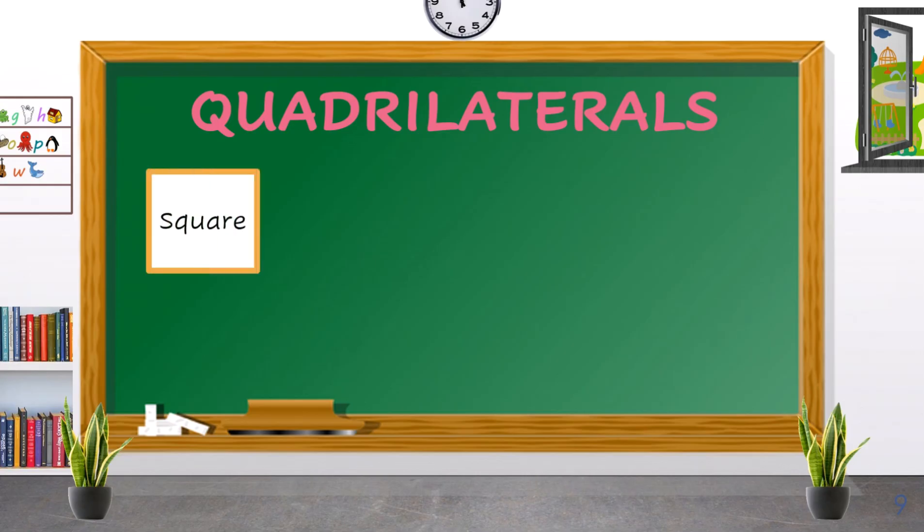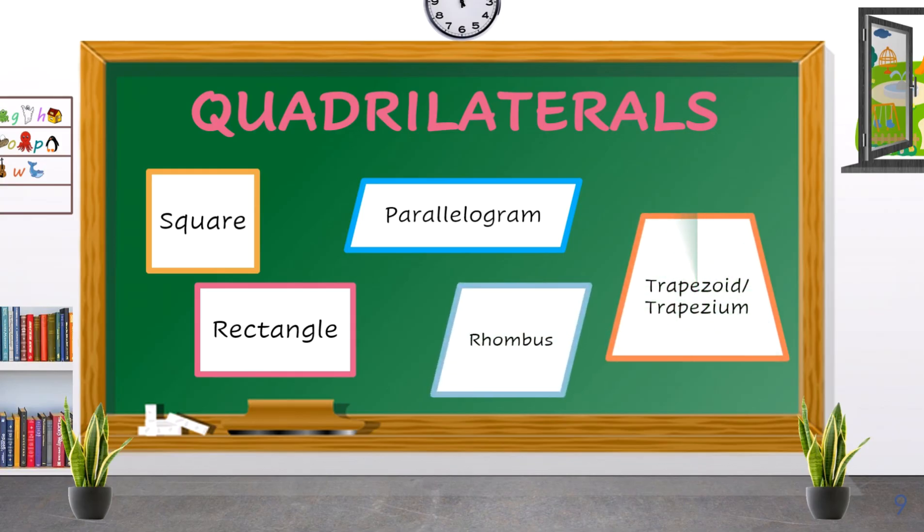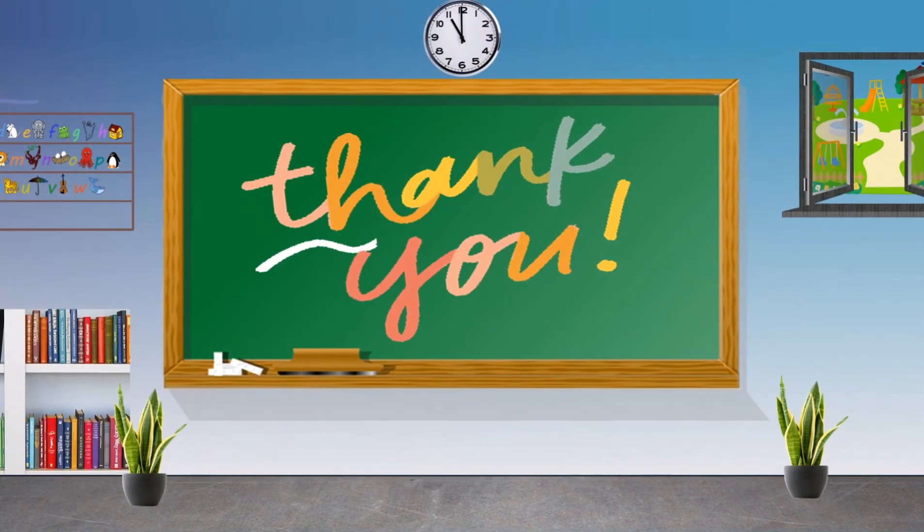Quadrilaterals are any polygons that have exactly four sides. That is square, rectangle, parallelogram, rhombus, and trapezoid. Thank you.